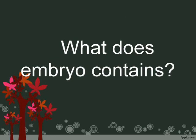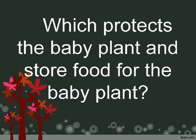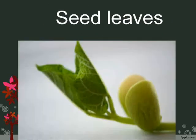What does the embryo contain? A baby shoot and baby root. The seed leaves protect the baby plant and store food for it.